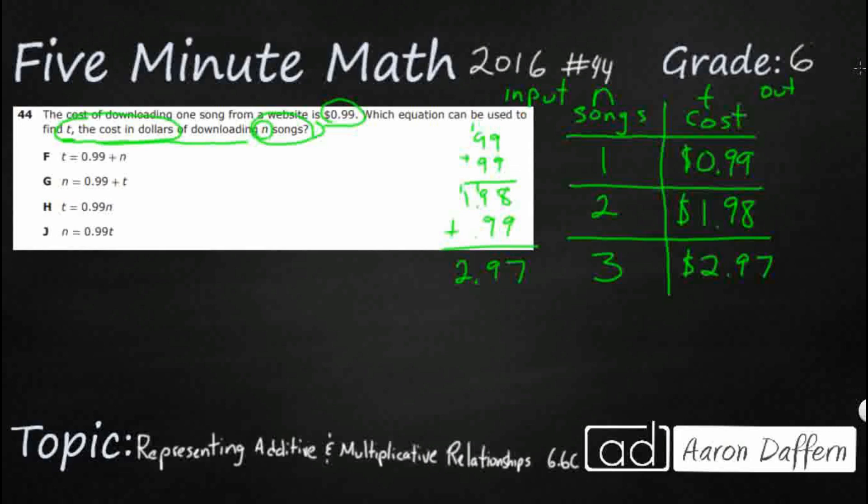We're used to the input-output table, but really in sixth grade we don't call them input-output tables - we call them dependent and independent variables. This first one is our independent variable because we control that. It's our input. Our output is our dependent variable because it depends on what we do with the input. So we have one song, we get 99 cents; two songs, $1.98.